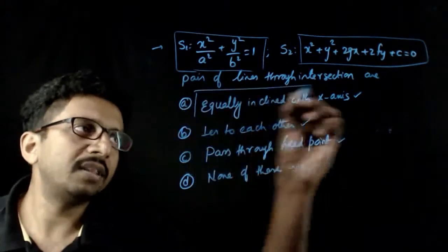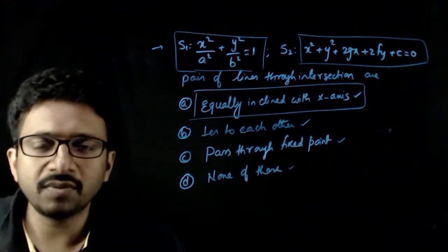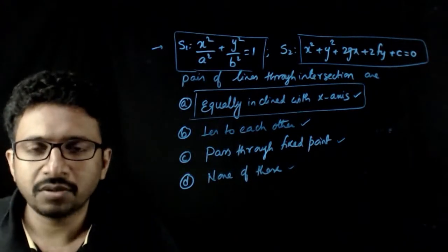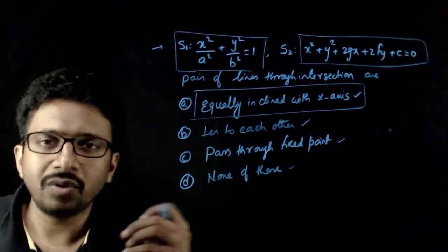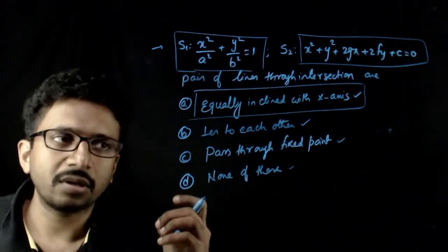That is equally inclined with x axis. The lines will be equally inclined with x axis. If you want the derivation, you can go through any standard book of ellipse.